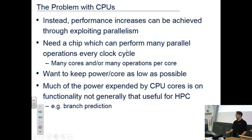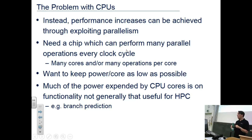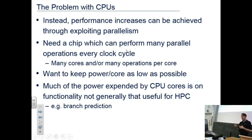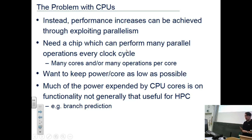We can increase performance by increasing parallelism - both on a CPU and using lots of CPUs - giving many cores or many operations per core, while keeping power low. The problem with CPUs is they're very general purpose and have to do many things. They spend a lot of time on things useful for general purpose computing but not for HPC - for example, branch prediction, which involves a lot of chip logic to predict which path code will take. That's fantastic for compilation but not for high performance computing.